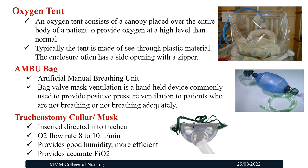The Oxygen Tent consists of a canopy placed over the entire body of a patient to provide oxygen at higher levels than normal. The tent is made of see-through plastic material with side openings and a zipper. The Ambu Bag (Artificial Manual Breathing Unit) is a bag valve mask device used to provide positive pressure ventilation to patients who are not breathing or not breathing adequately. The Tracheostomy Collar Mask is inserted directly into the trachea; oxygen flow rate is 8–10 litres per minute, providing good humidity, efficiency, and accurate FiO2.